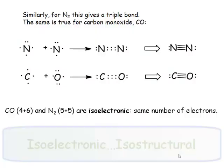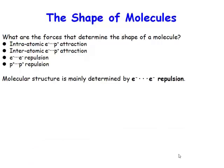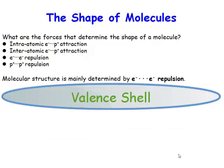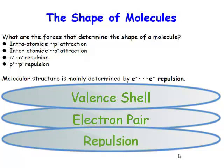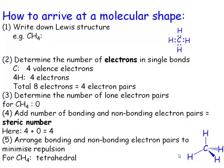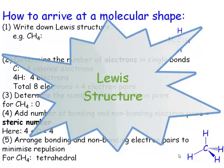What governs the shape of a molecule? Valence shell electron pair repulsion. So we can predict the shape of a molecule by considering how many electron pairs there are and how they're going to be repelling. So let's give ourselves a very simple example in the first instance. You start with the Lewis structure.